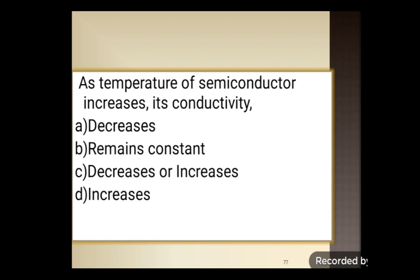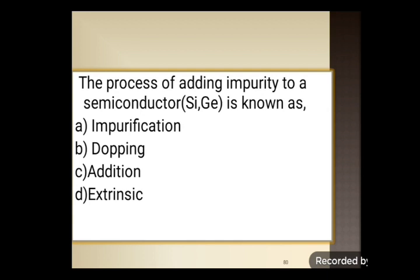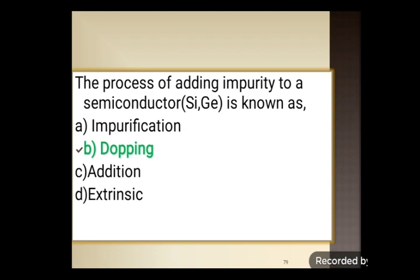Next question: as the temperature of the semiconductor increases, its conductivity — options: decreases, remains constant, decreases or increases, or increases. When the temperature of a semiconductor increases, its conductivity increases. Option D is the correct answer. Next: the process of adding impurity to the semiconductor silicon and germanium is known as — impurification, doping, addition, or extrinsic. The correct answer is option B: doping.